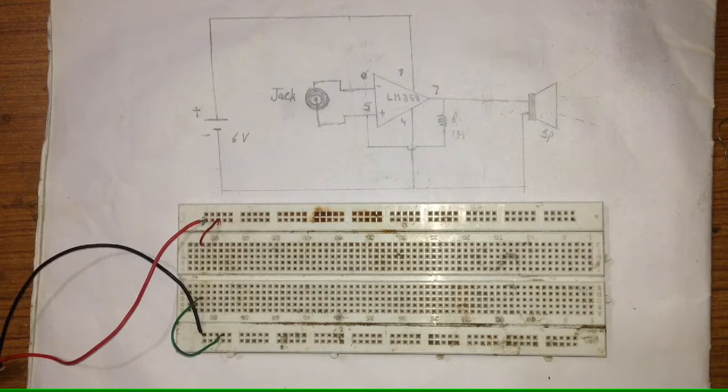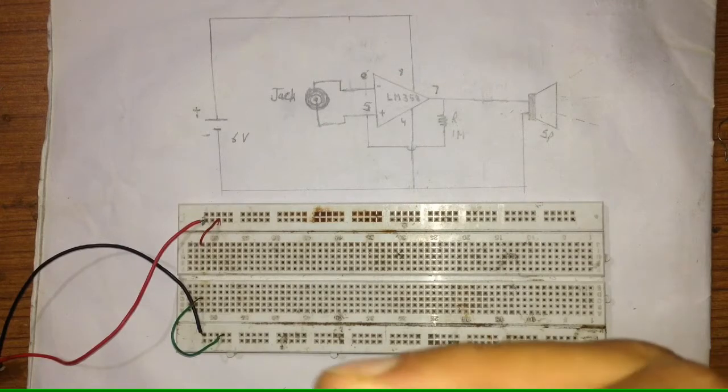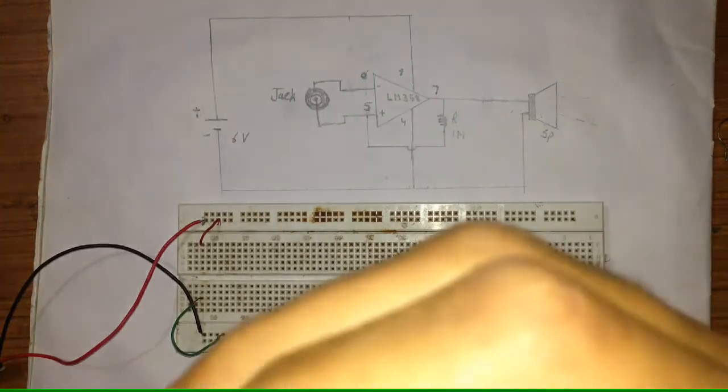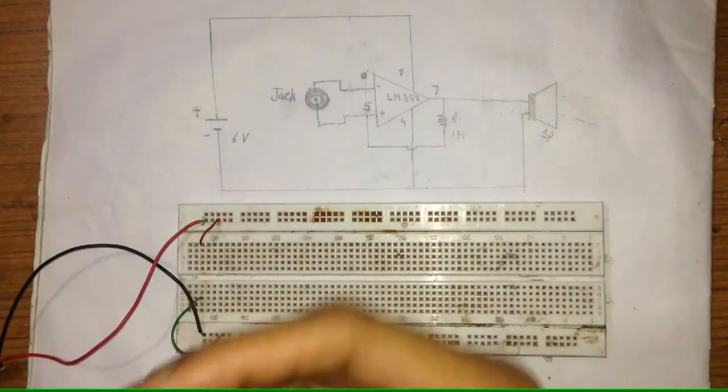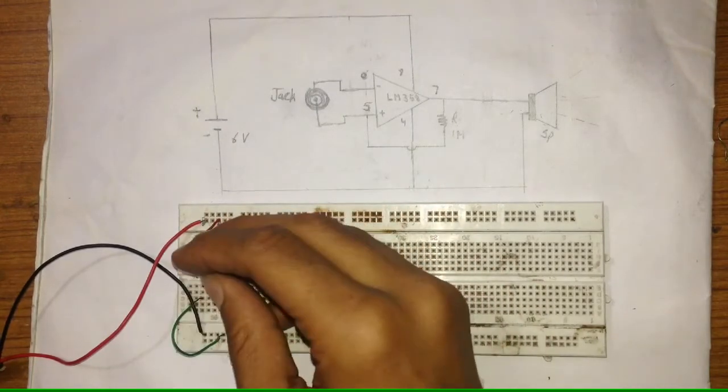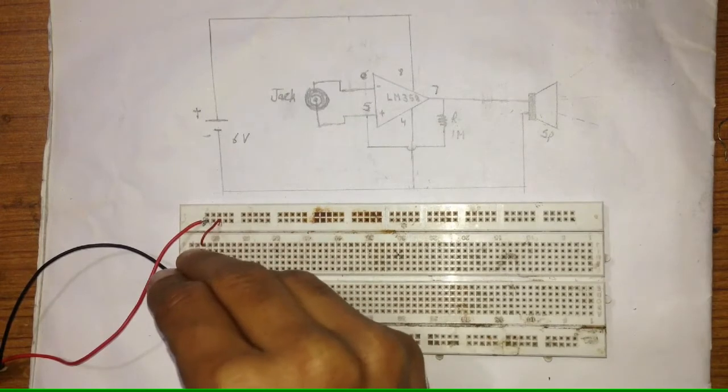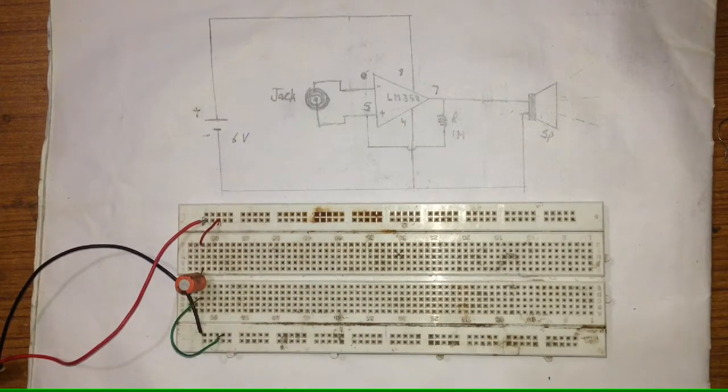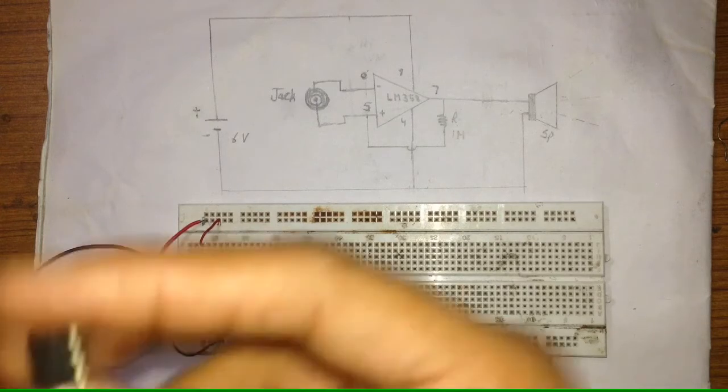Now I start setting up the components. We start with the capacitor of 16 volts, 470 microfarad. It is polarized, so put the negative to the negative end and positive to positive. Now connect the positive and negative ends of the capacitor. It is connected like this. Now the LM358 IC amplifier.